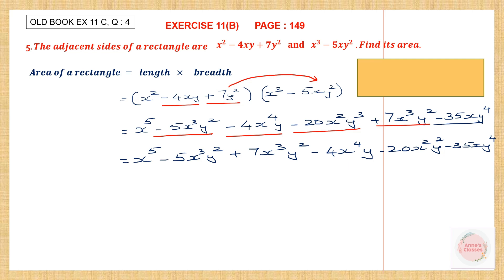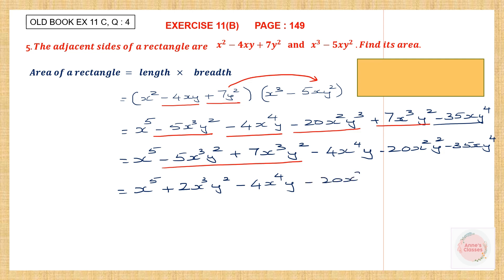Now let's work out and see. Here we have x to the power of 5. Then these are like terms — signs are different, so put the sign of the bigger number and subtract: 7 minus 5 is 2, giving 2x cubed y squared. Then we have minus 4x to the power of 4 y, minus 20x squared y cubed, and minus 35xy to the power of 4.